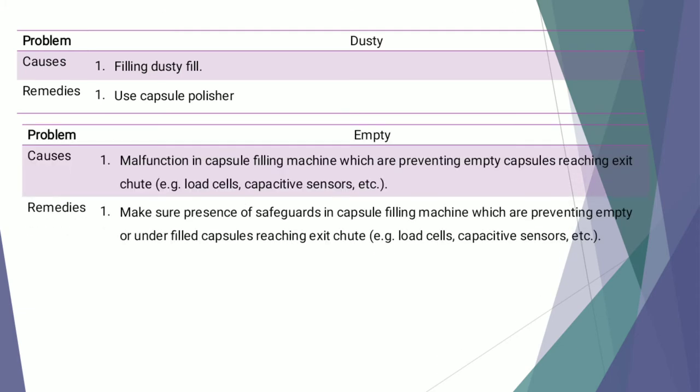The next problem is empty capsules. Many times the capsule may remain empty without filling of the required material within the body. This can be because of malfunctioning in the capsule filling machine, which prevents empty capsules from being caught at the exit chute using a load cell or capacitive sensor.